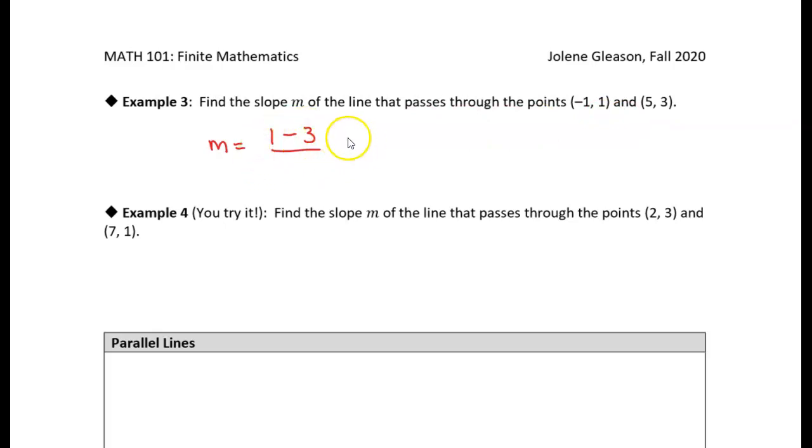So you can see I get a negative two in the numerator. But I have to make sure that if I chose this to be my point one and this would be my point two, then I have to choose the x-coordinate of the same point first. So I need to have negative one minus five. So you can see I get negative two over negative six, which is a negative over a negative. So negative two over negative six becomes a positive one-third.